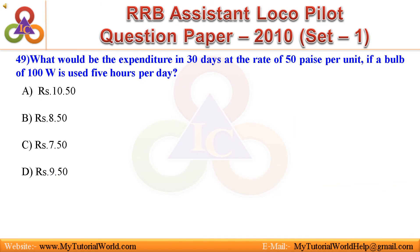Question 49: What would be the expenditure in 30 days at the rate of 50 paise per unit, if a bulb of 100 W is used 5 hours per day? A. 100.